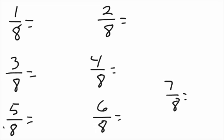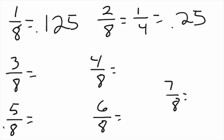Moving to the 8s — not much to remember here. 1 over 8 is 0.125. 2 over 8 reduces to 1 over 4, and since we think about quarters with 4s, that's 0.25. 3 over 8 we have to memorize: 0.375. And 4 over 8 is just 1 half, which equals 0.50.